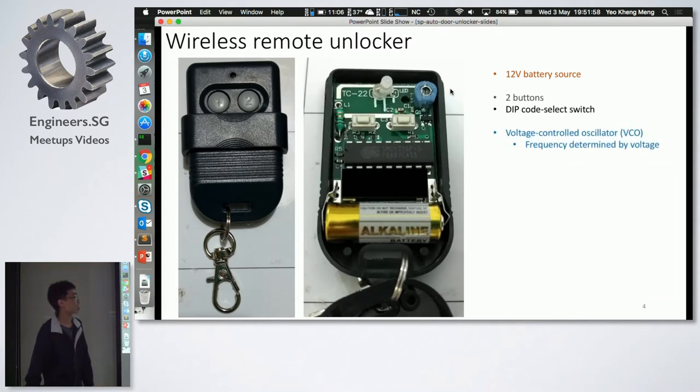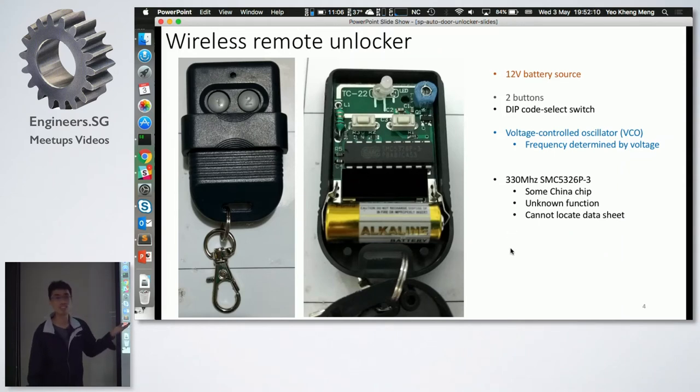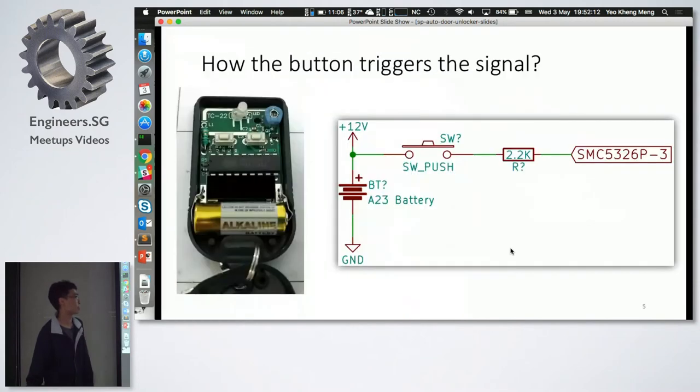Then there's actually a code select switch. I deliberately blanked this part out because it contains the code, so I don't want it to be shown. Then there's actually a voltage control oscillator, so this one here. This generates the frequency based on the voltage. Then there's actually a chip you can see here. It's some China chip. I tried to Google this, I couldn't find the data sheet for this. Never mind about that. So I decided, why not try to find a way to trigger this button. I use a multimeter and I test.